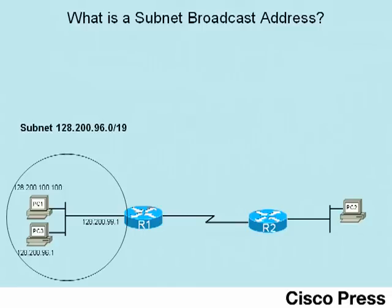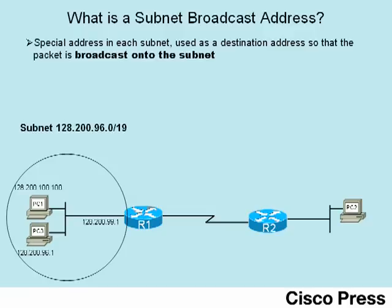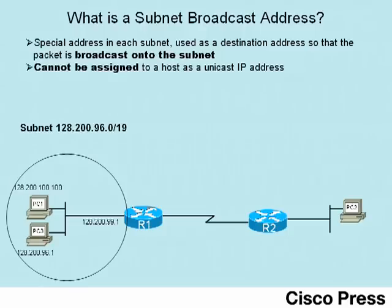Before seeing the process, let's look at the idea of a subnet broadcast address. A subnet broadcast address is one single address in each subnet. When used as a destination address in a packet, it causes that packet to be broadcast to all hosts in that subnet. Because it's used for broadcasting, it cannot be assigned to a host as a unicast IP address.